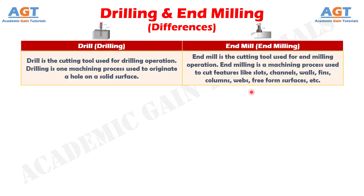Difference number one: drill is the cutting tool used for drilling operation. Drilling is one machining process used to originate a hole on a solid surface, whereas end mill is the cutting tool used for end milling operation. End milling is a machining process used to cut features like slots, channels, walls, fins and columns, webs, free-form surfaces, etc.